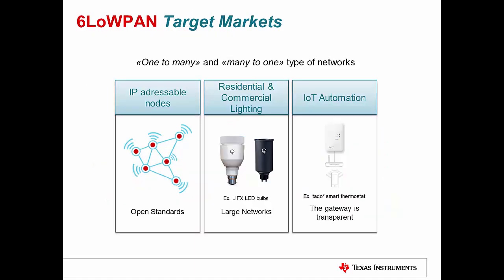What are the target markets of 6LoWPAN? Although there are many more markets, the most popular are end applications where every node needs to be IP addressable, including residential and commercial lighting and IoT automation. The diversification of applications is continuously progressing and rising steeply. It is finding popular demand in smart grid, metering, line monitors and relay controllers, and street lighting. This entire specification is pretty broad and standard, and is therefore becoming very popular.